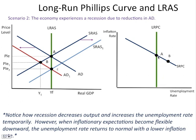How do we show that on the Phillips curve model? We need to show lower prices and lower unemployment simultaneously. The only way to do that is to shift the short run Phillips curve to the left, bringing down both the price level and the unemployment rate. When you look at these two graphs side by side, the SRPC is a mirror reflection of the SRAS curve — if the SRAS shifts in one direction, the SRPC shifts in the other direction.